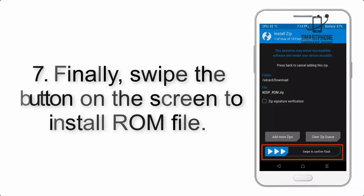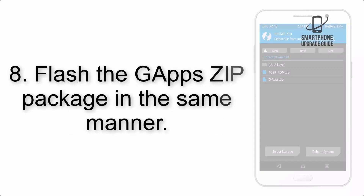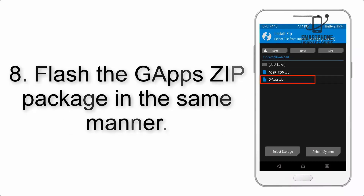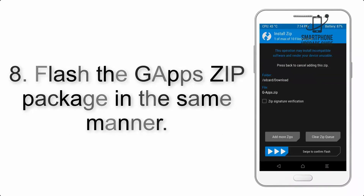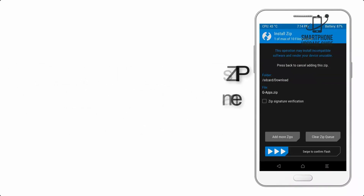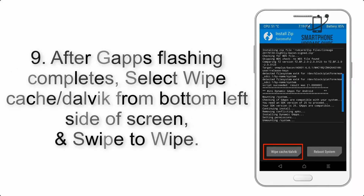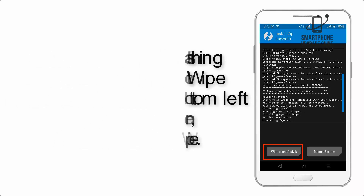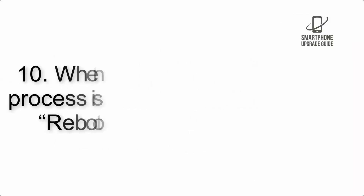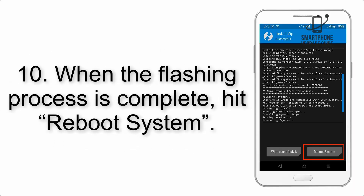Step 7: Swipe the button on the screen to install the ROM file. Step 8: Flash the Gapps zip package in the same manner. Step 9: After Gapps flashing completes, select Wipe Cache and Dalvik from the bottom left side of the screen and swipe to wipe.